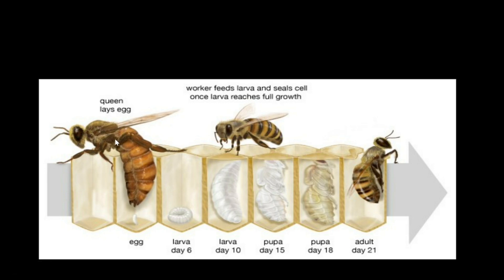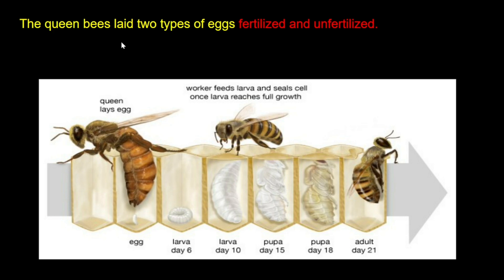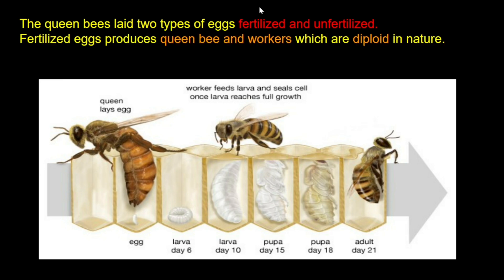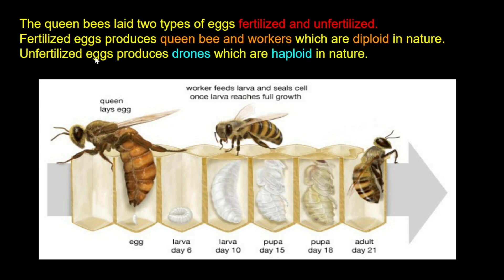The queen bee lays two types of eggs: fertilized and unfertilized. Fertilized eggs produce workers or queen bees, which are diploid in nature — diploid means 32 chromosomes, or 16 pairs. Unfertilized eggs produce drones, which are haploid in nature — haploid means 16 chromosomes.